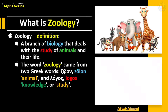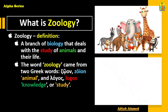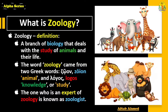The word zoology came from two Greek words: 'zoon', which means animal, and 'logos', which means knowledge or study. So in this way, zoology is the knowledge or study of animals.